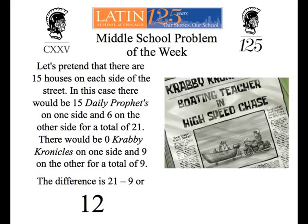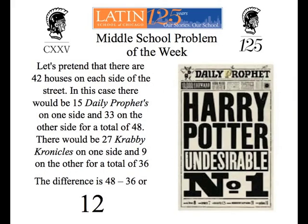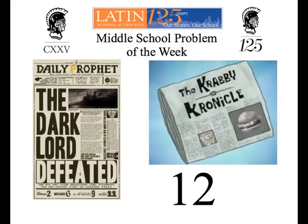21 take away 9 is 12. But just to be sure, let's try another number — our favorite number at the Problem of the Week is 42. Using 42, there are still 15 Daily Prophets on one side but 33 on the other, for a total of 48. For the Krabby Chronicle, there are 27 on one side and 9 on the other, for a total of 36. 48 take away 36 is 12. Whether you use algebra or trial and error, the answer is 12 — the answer to this week's Problem of the Week.